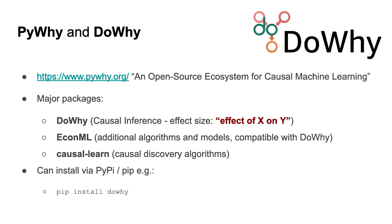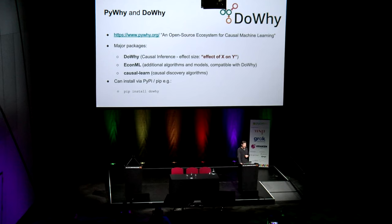That was the first part of the talk where I tried to convince you that you should be interested in causality. The second part looks specifically at a Python library called DoWhy, which I've been working with quite a bit. DoWhy is part of an ecosystem called PyWhy, which contains a few major packages: DoWhy, which is about causal effects; EconML — a lot of the people working in the causal inference space come from econometrics and epidemiology, so they've brought in many of their methods; and causal learn, which contains causal discovery algorithms. This talk is going to mostly focus on the DoWhy part.